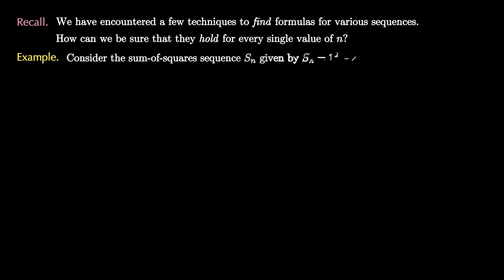Recall that we've encountered a few techniques to find formulas for various sequences. But how can we be sure that these formulas hold for every single value of n? For example, consider the sum of squares sequence s sub n, given by s sub n equals the sum of the first n squares.